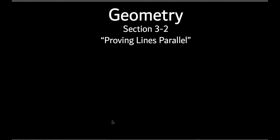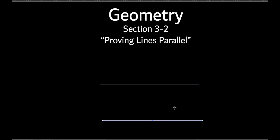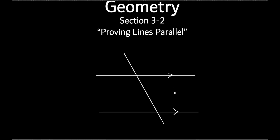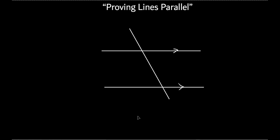Today's lesson is very similar to what we did yesterday. Let me remind you briefly - we have a transversal with arrows indicating parallel lines. Those arrows indicate they're parallel. This topic is called 'Proving Lines Parallel.' We covered theorems: alternate interior angles are equal, corresponding angles are equal, and consecutive interior angles are supplementary - we just did those yesterday.